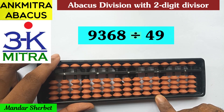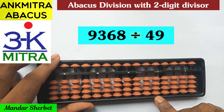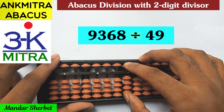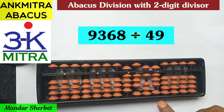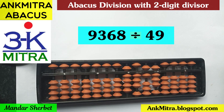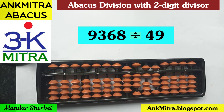I'll place 9368 as our dividend, ending on the question set's unit rod — it's a four digit number so it starts from the appropriate rod. Our divisor is 49. In this case I won't be considering any multiples of 49 — I'll use only one times 49, that is 49 itself, subtracting it several times to arrive at the final answer.